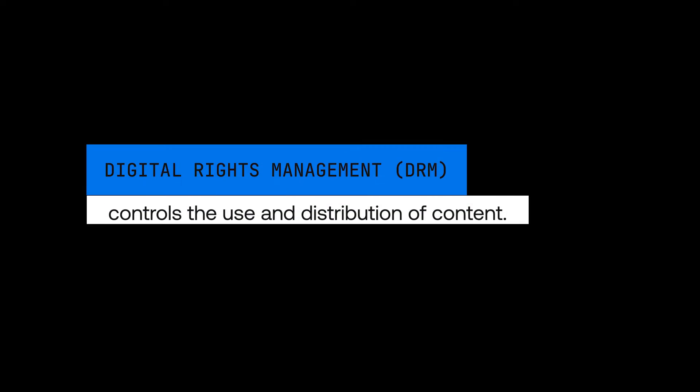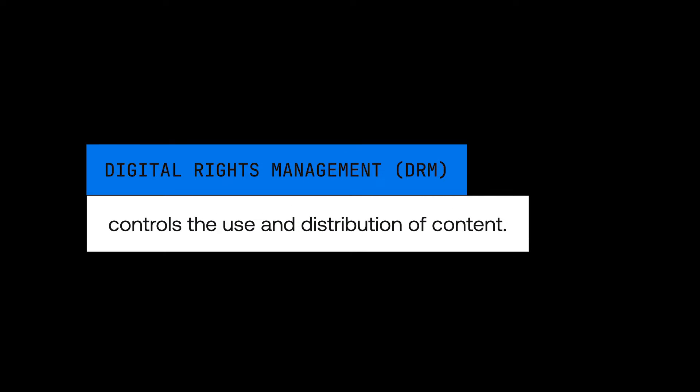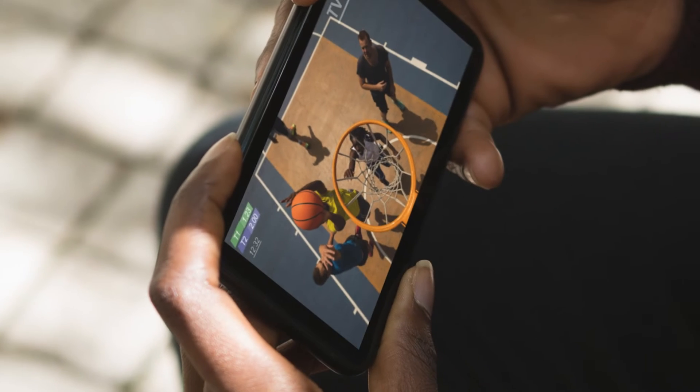DRM stands for digital rights management and is a generic tool used across digital media to control access — who can see, view, or share any protected content. DRM works really well for companies who are live streaming sports and want to prevent valid customers from sharing the stream with other customers who aren't paying.